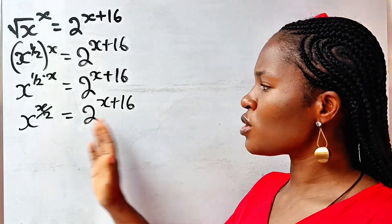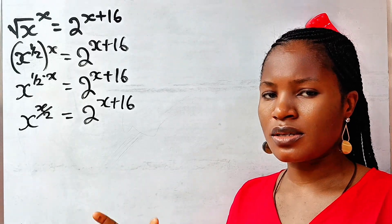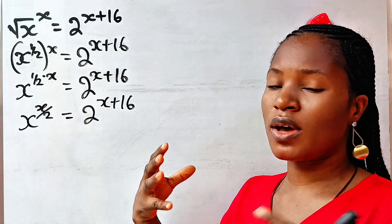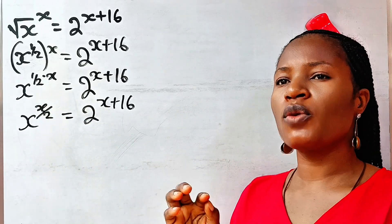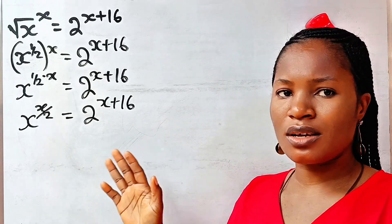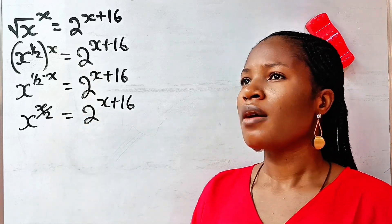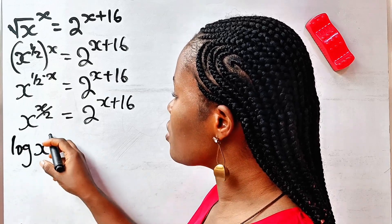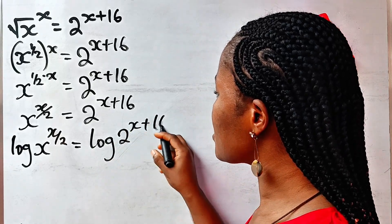Now let us introduce log to both sides of this equation. Anytime you are solving anything in mathematics and you notice that the variable is the power — just like x is what we are looking for and is the power — the only way to solve it is to introduce either natural log or log to both sides. So I will have log of x to the power of x over 2, is equal to log of 2 to the power of x plus 16.